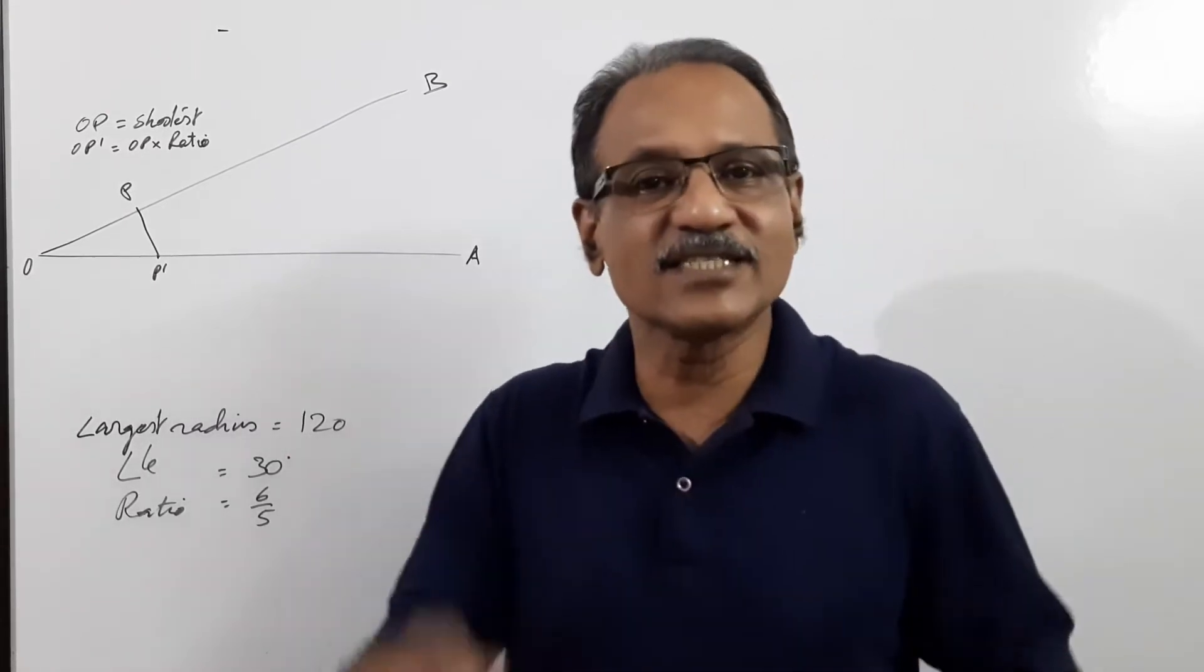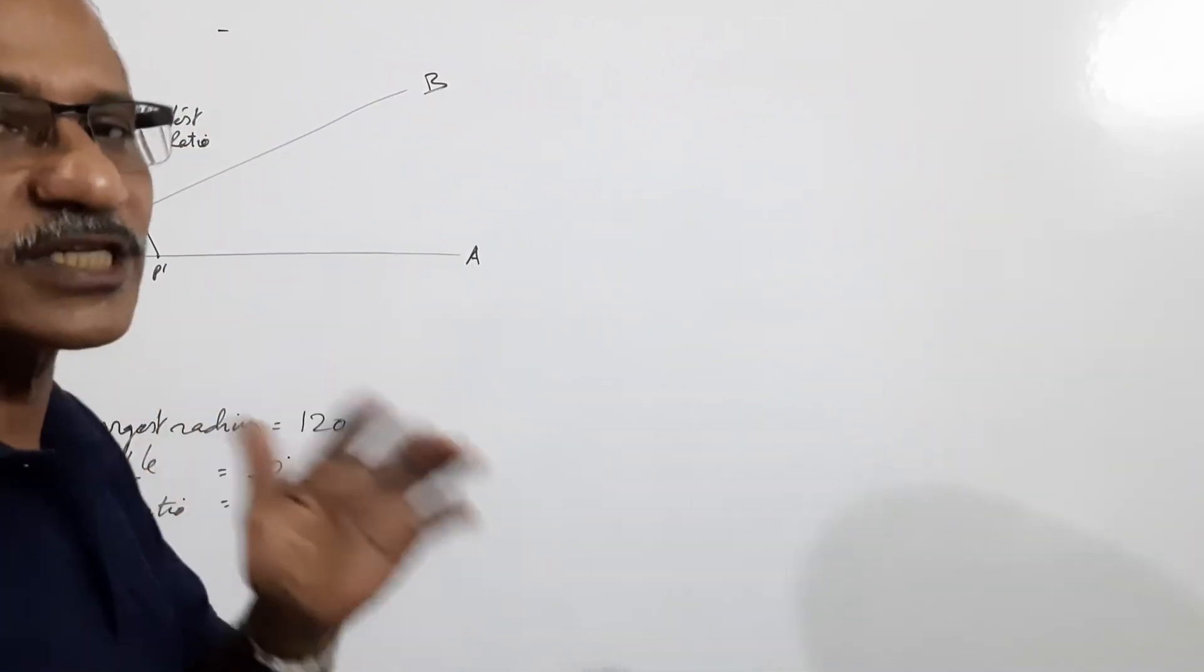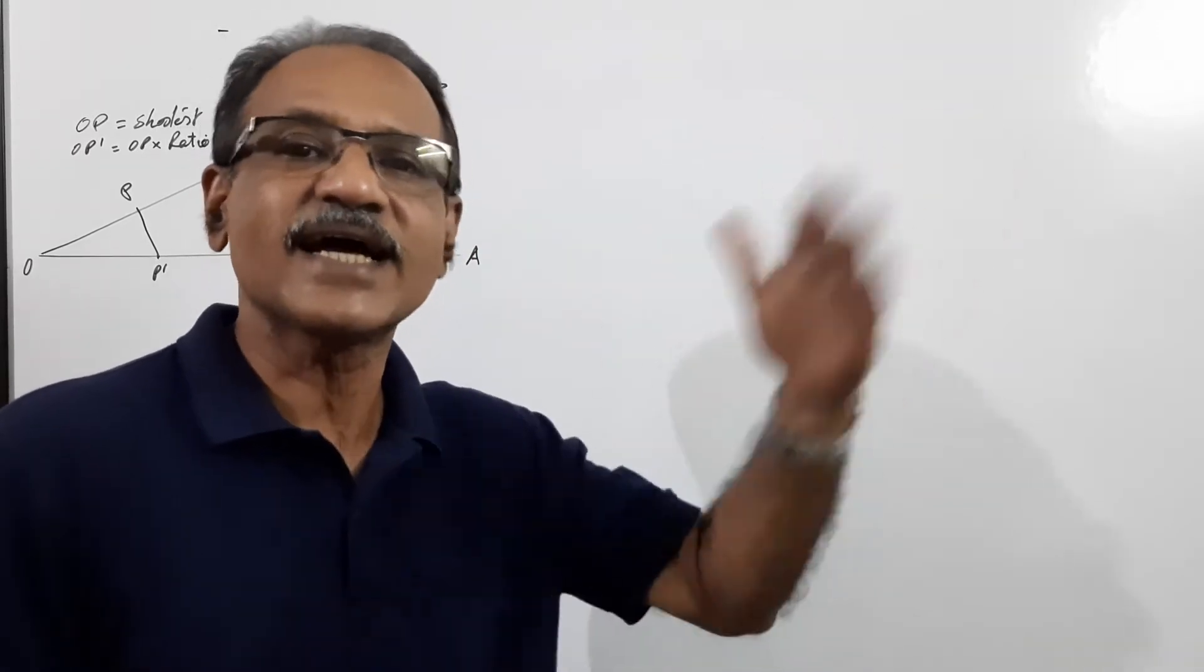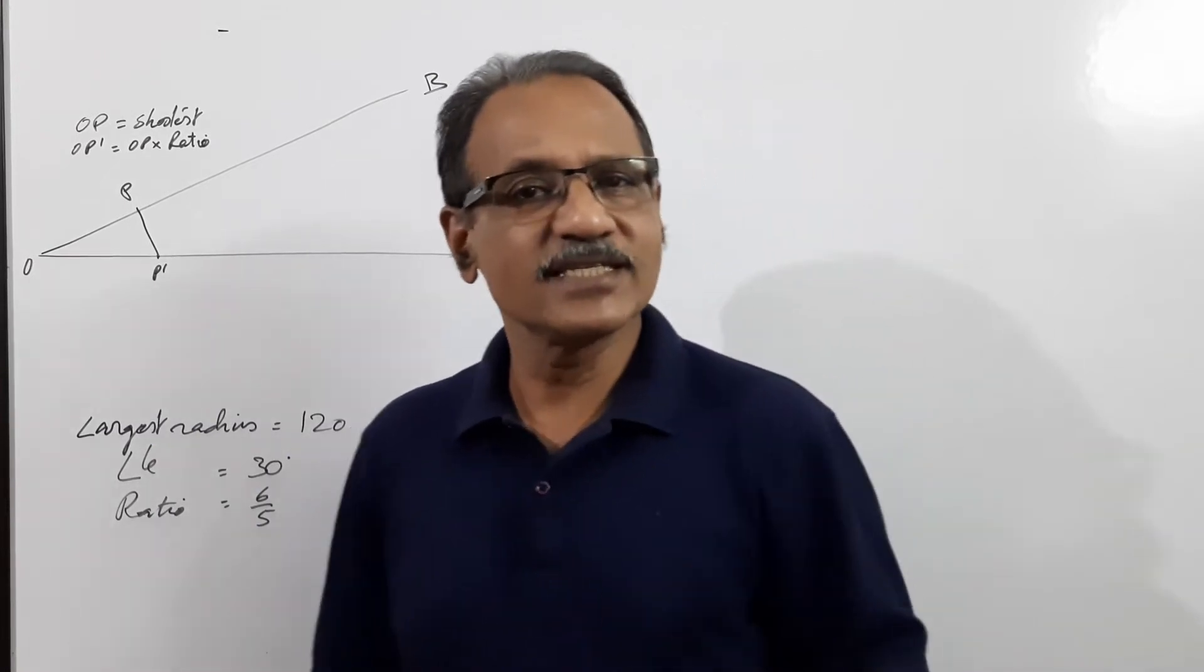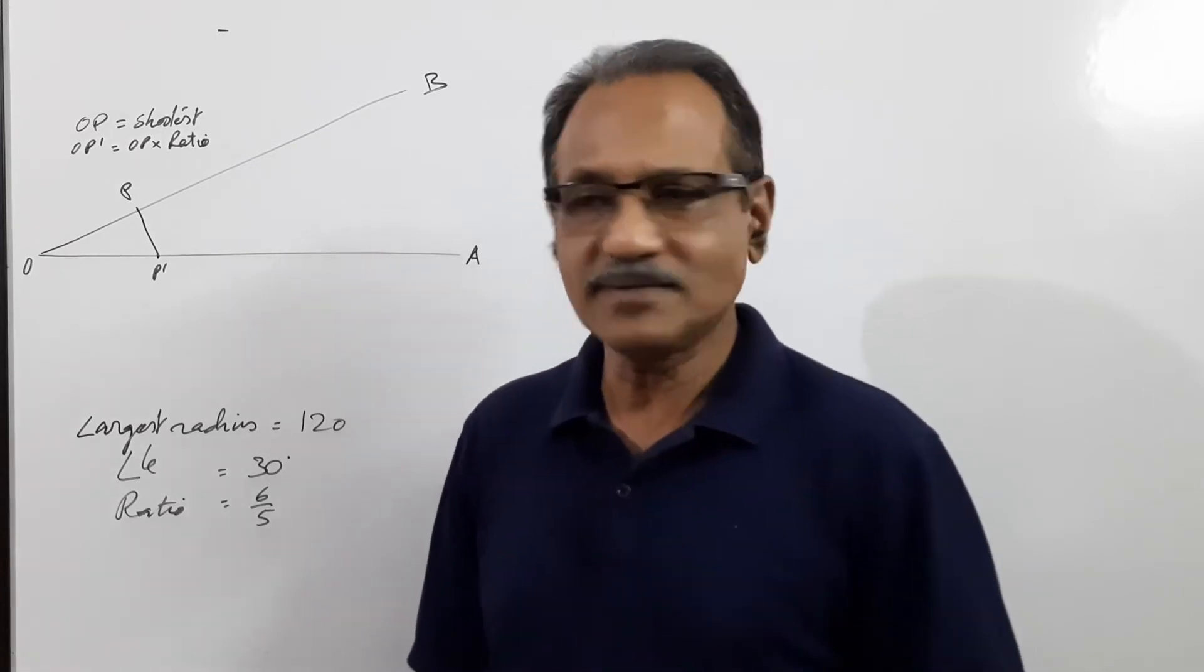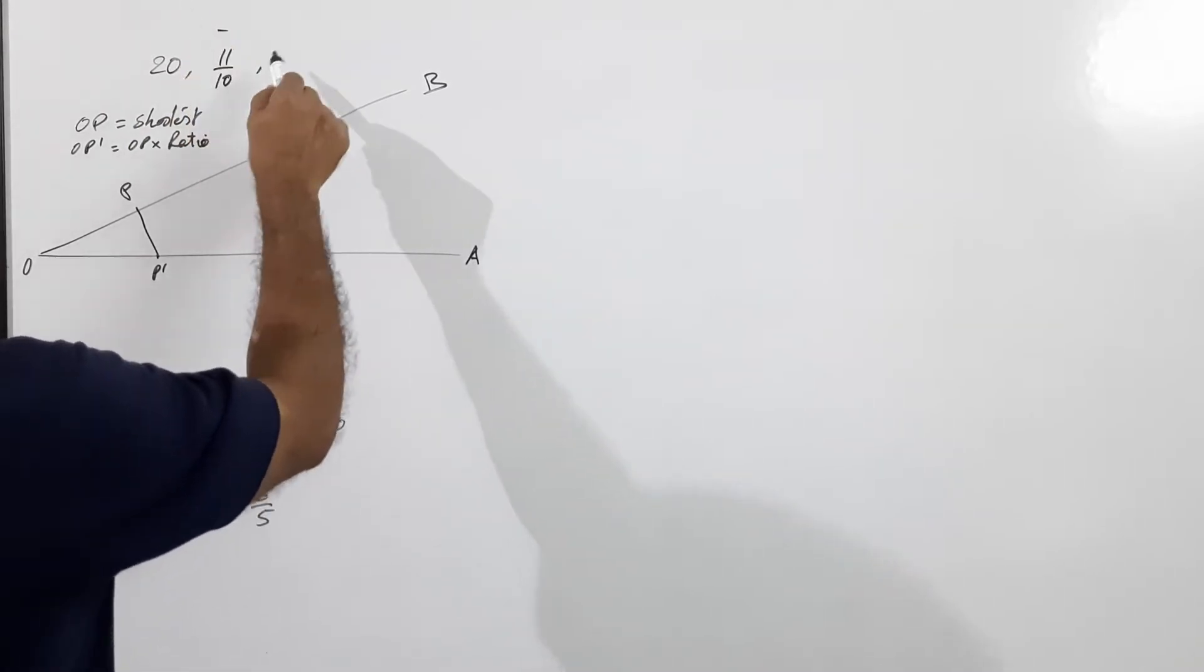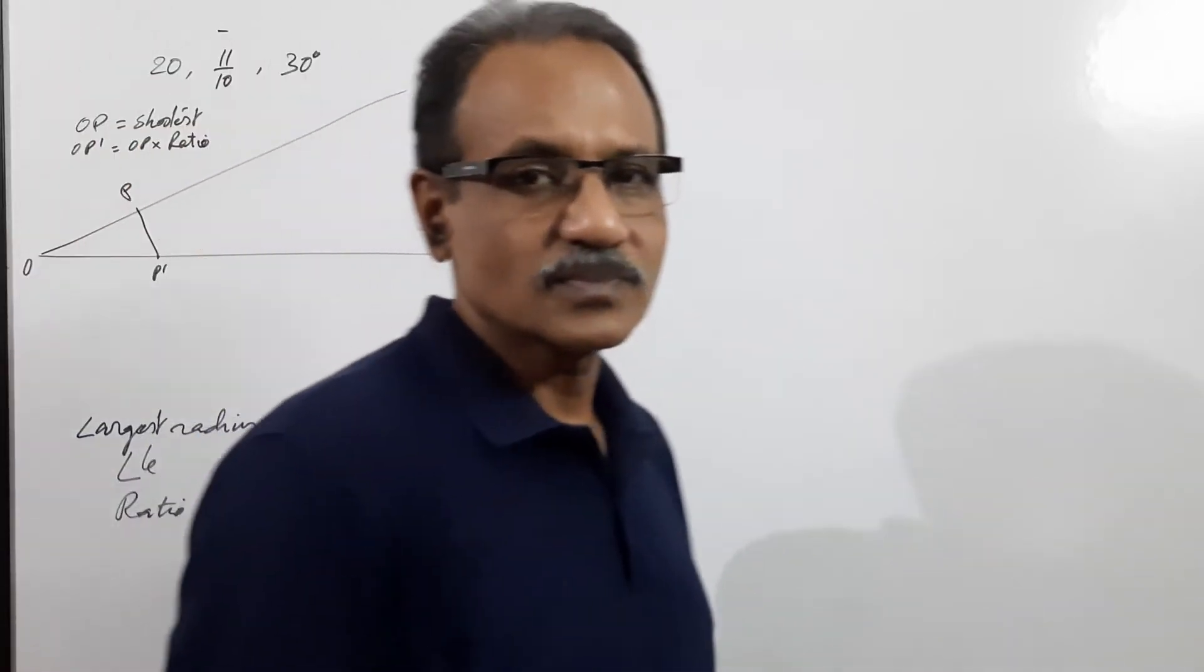Let's take this case. Suppose you are given the shortest radius, angle between the successive radii, and the ratio with which the radius increases at that angle. The shortest radius is say 20mm, ratio is say 11 by 10, and the angle is 30 degrees.